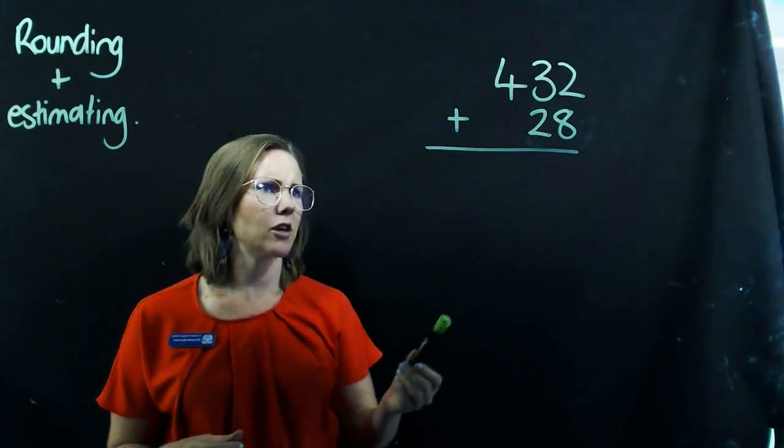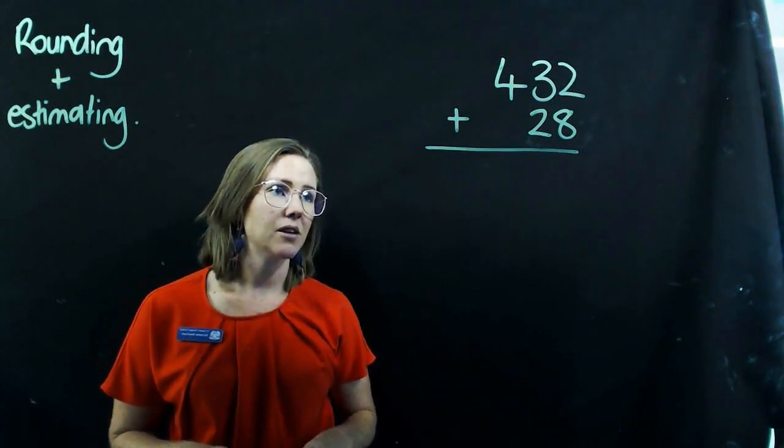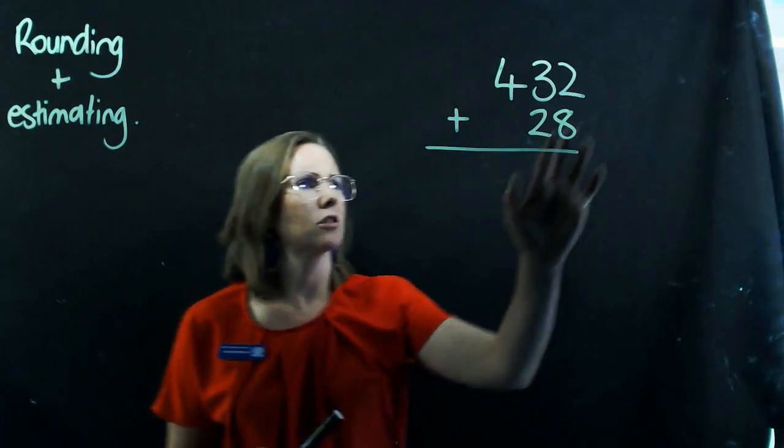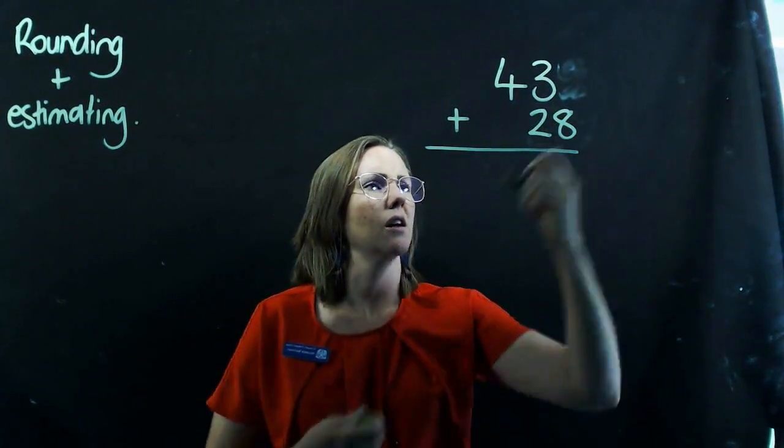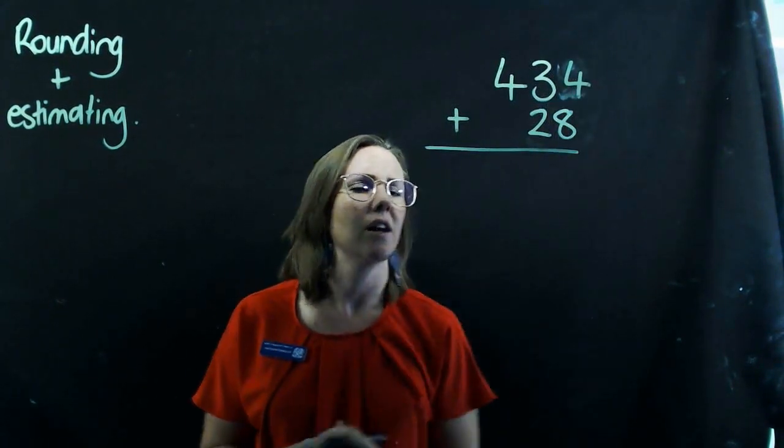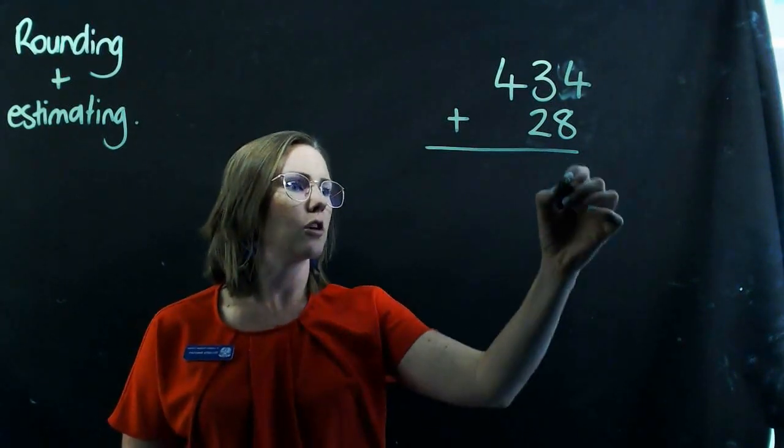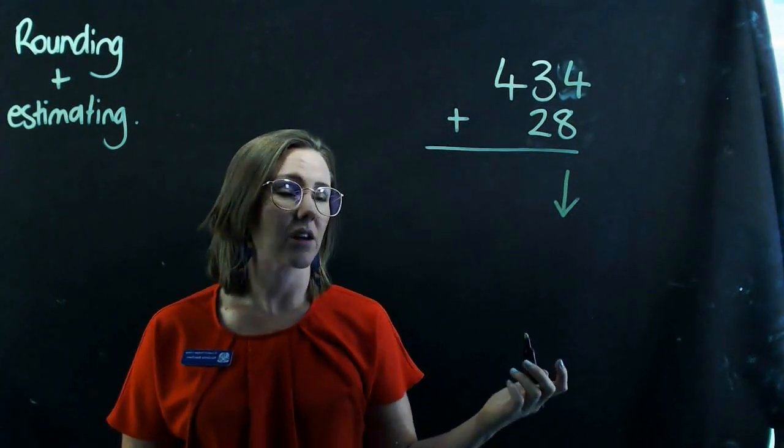So say you've got an addition sum like 432 plus 28. Now some of you might find that really easy straight away. I've just realized that I've put that like as a neat 10 figure. Let's say if I change that to 434, that's not quite as easy to get straight away for lots of boys. So what you could do in your head or on paper is to round that to the nearest 10.